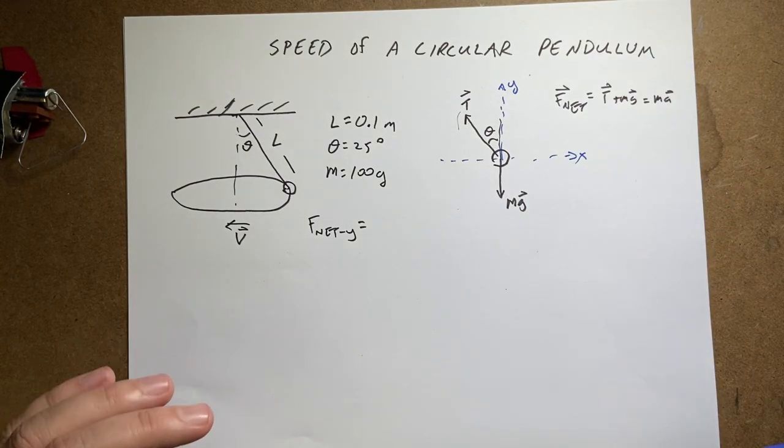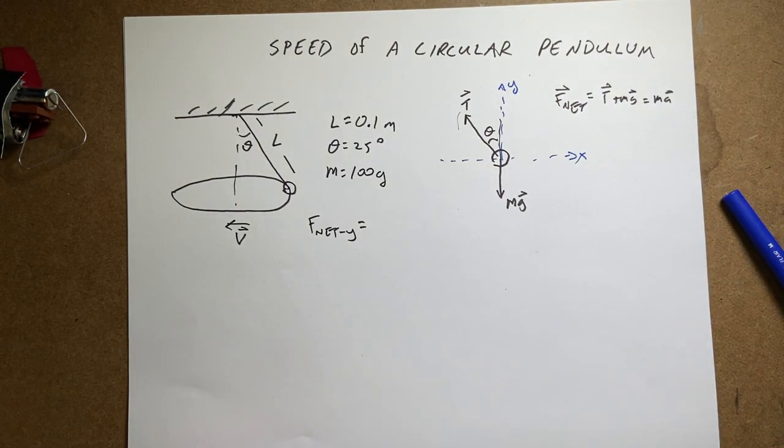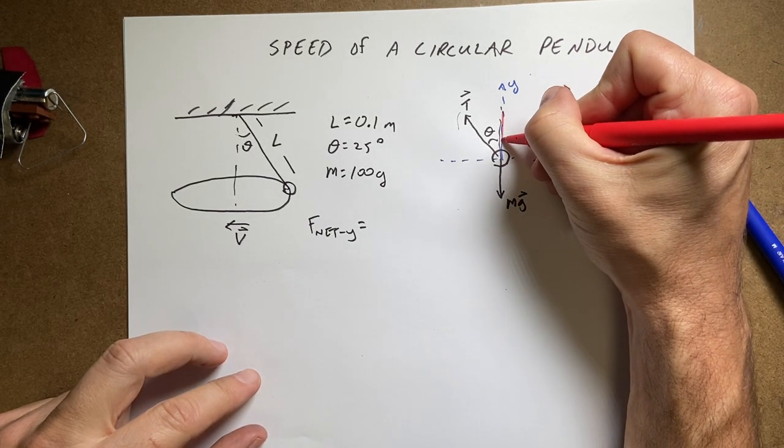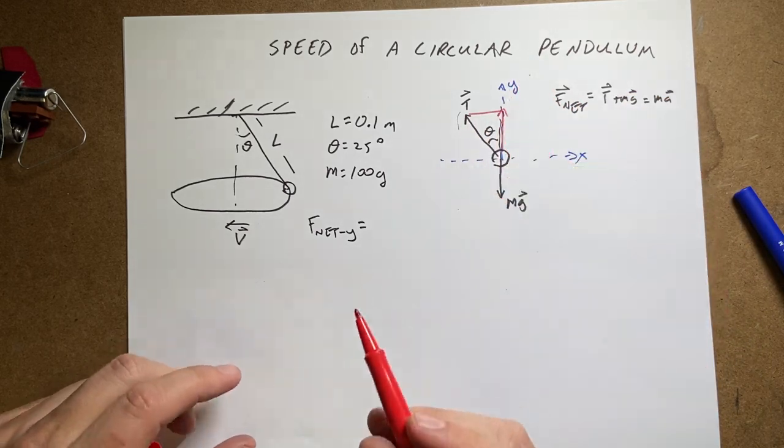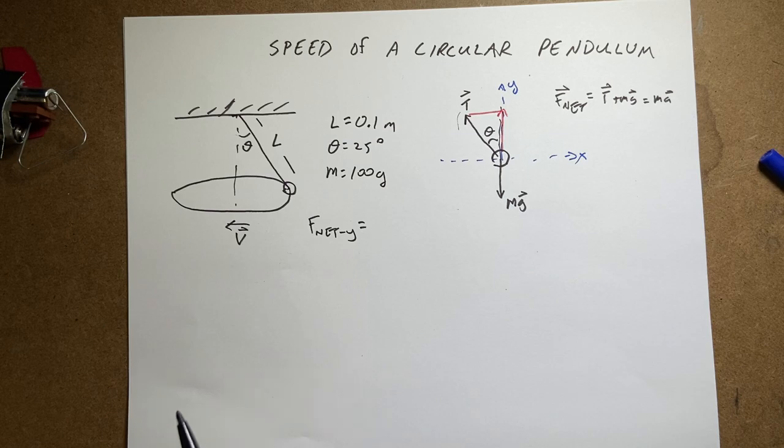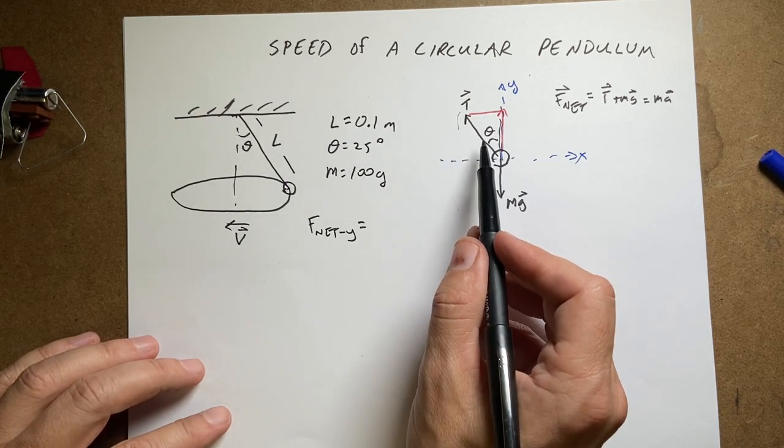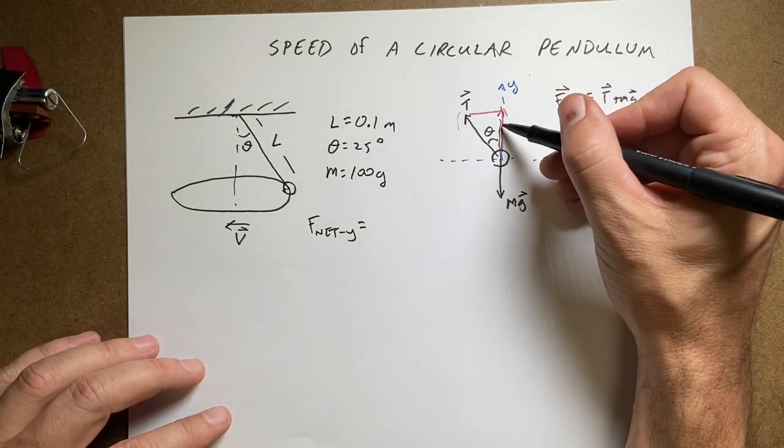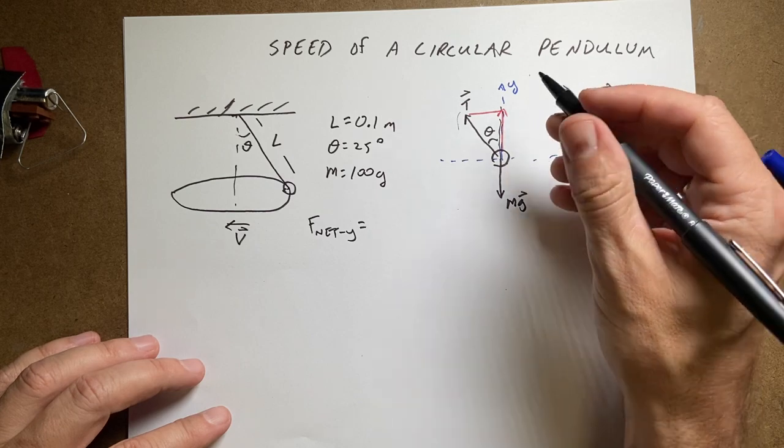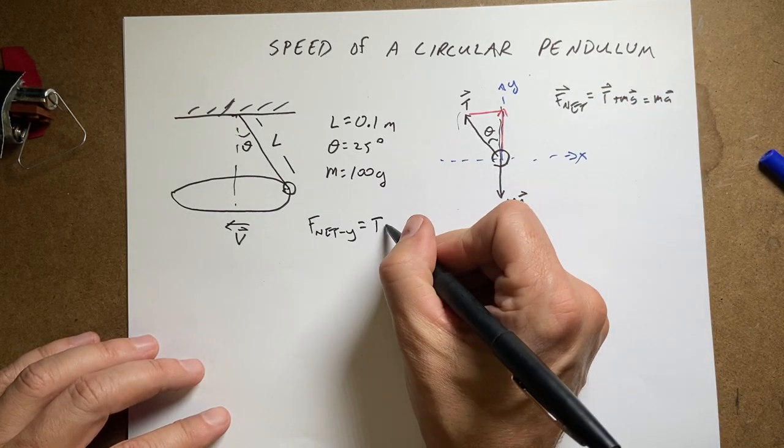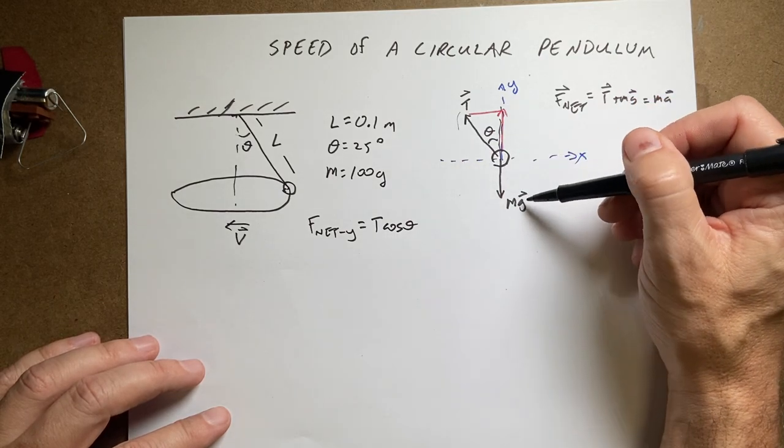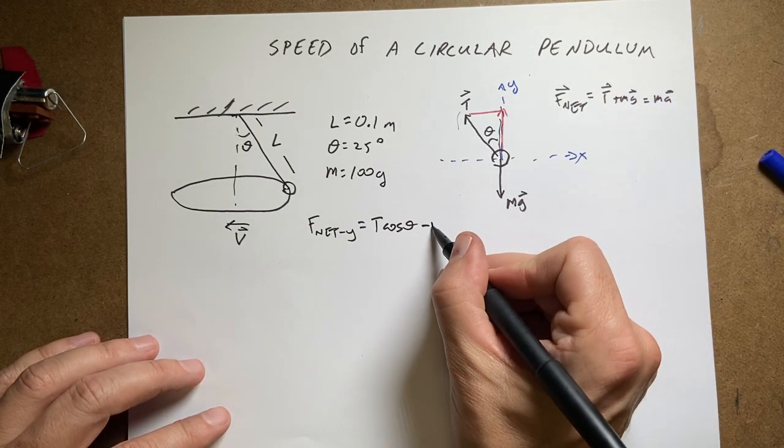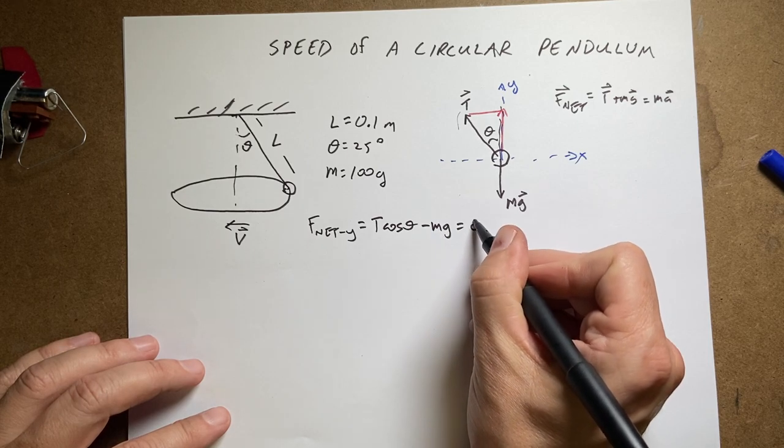So what forces are in the y direction? Well, I have, my red marker is dying. I should have gotten a new one. So here is the y component of the tension. Here is the x component of the tension. So this whole length is T, the tension, and this is the adjacent side. So this is going to be T cosine theta is the y component of that tension. What's the y component of the gravitational force? It's going to be minus mg and that equals zero.